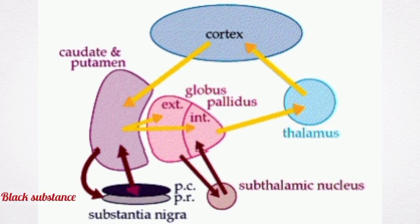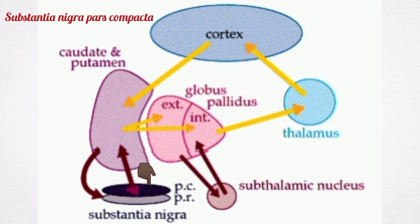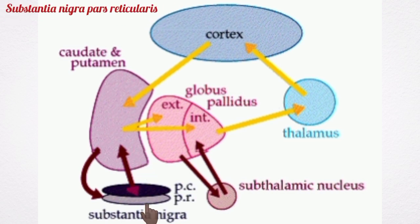The substantia nigra is named black substance because of its high level of melanin. It is divided into two parts: the substantia nigra pars compacta and the substantia nigra pars reticularis.